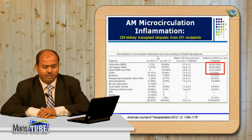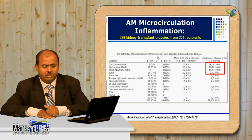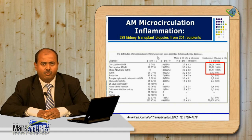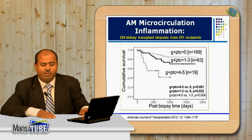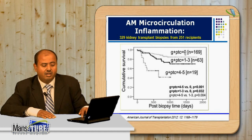This microcirculation inflammation index g + ptc correlates with C4d-positive AMR, C4d-negative AMR, and mixed cellular/humoral rejection. Combined humoral and cellular rejection has a worse outcome than cellular rejection alone. If g + ptc is zero, graft survival is acceptable; but if the summation score is between four and five, graft survival is significantly and drastically affected.